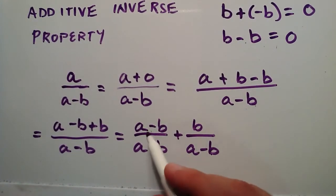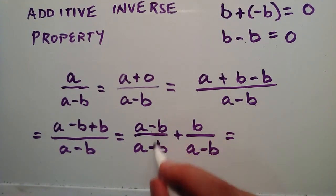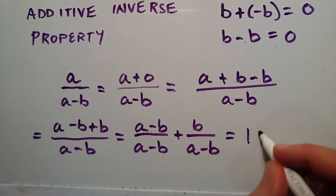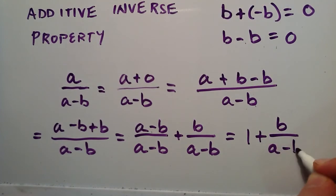So now we have something divided by itself, and anything divided by itself equals one. And then we add that to the second term, which is b divided by a minus b.